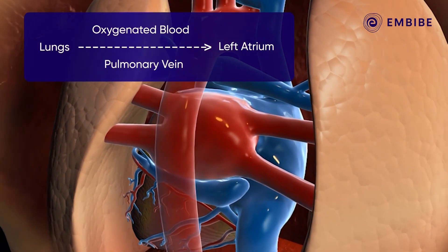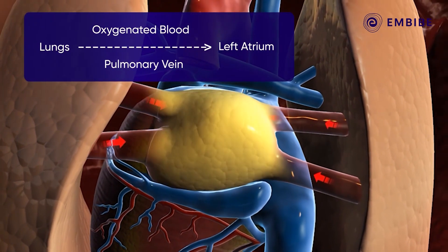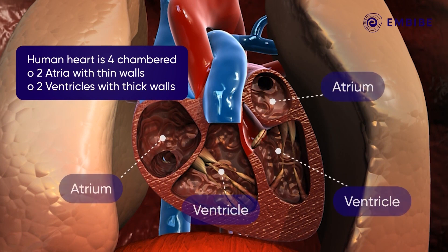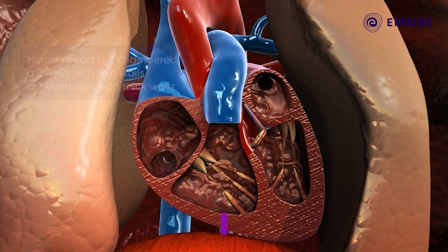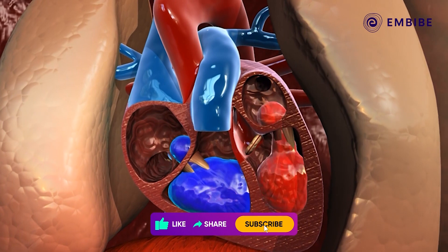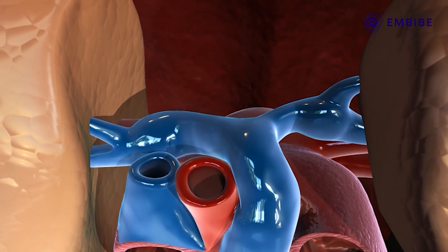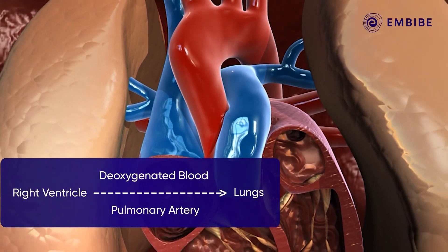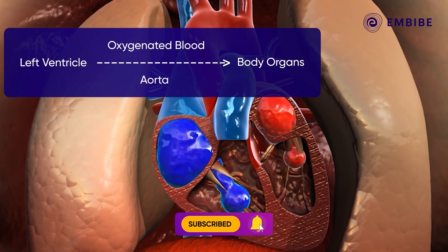The right atrium receives deoxygenated blood from all parts of the body except the lungs, through the superior and inferior vena cava. The pulmonary vein brings oxygenated blood from the lungs to the left atrium. Looking at the internal view of the heart, we see two upper thin-walled atria and two lower thick-walled ventricles. The right and left atria pump blood into the right and left ventricles respectively. From the right ventricle arises a pulmonary artery, which carries deoxygenated blood to the lungs.